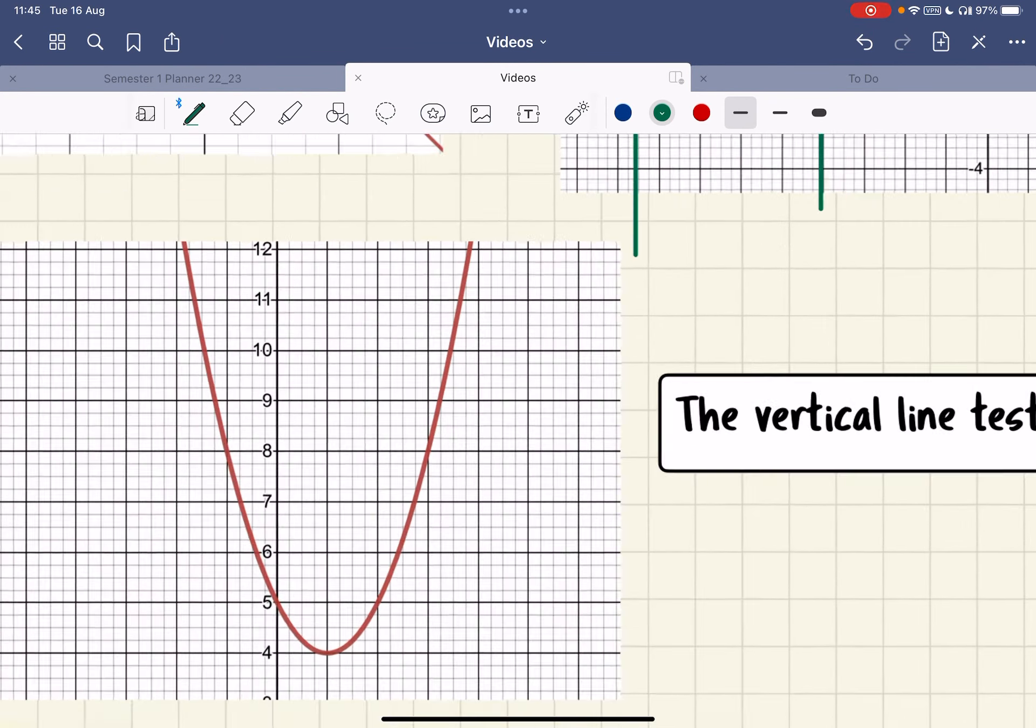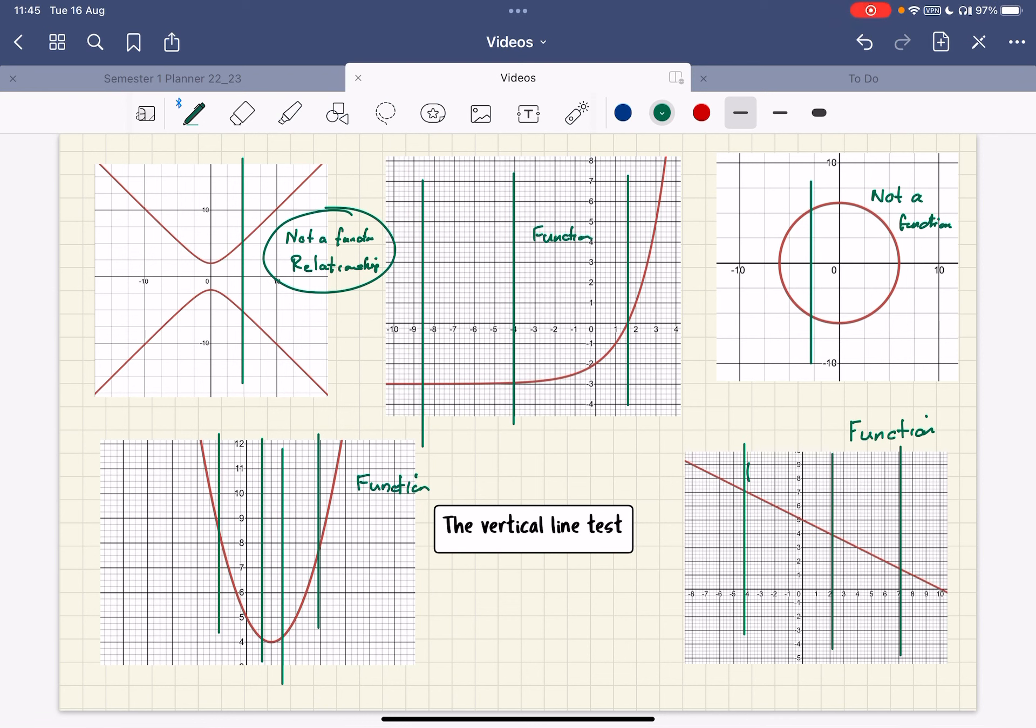Finally, this one here, the quadratic - let's put some vertical lines through. So anywhere that I can make it go through twice? If I put these vertical lines, no. So this one becomes a function.